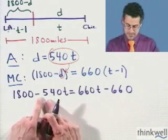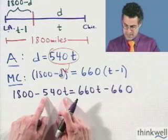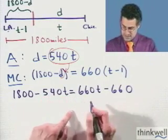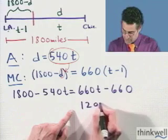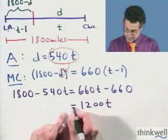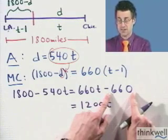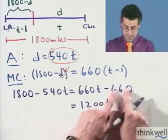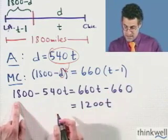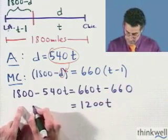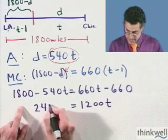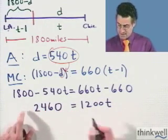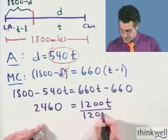Now I can actually combine terms here a little bit. I can add the 540T to both sides. And when I bring that to this side, I'm going to see here 1,200T. And if I add 660 to both sides, it'll drop out of here. And when I add it to this side, I'm going to see 2,460.